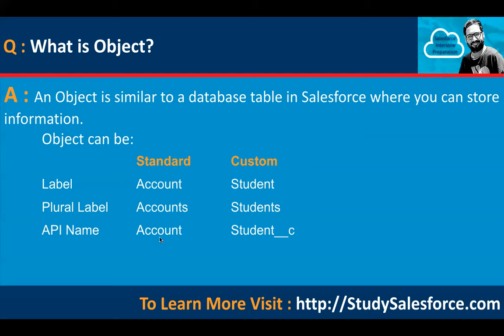Plural labels are used for tabs — whenever you create a tab for any object, it uses the plural label. As for the API name: if you have a standard object, its API name is simple, like 'Account.' If you have a custom object, its API name will have '__c' appended automatically. This way, with the help of the API name, you can easily recognize which is a standard object and which is a custom object.